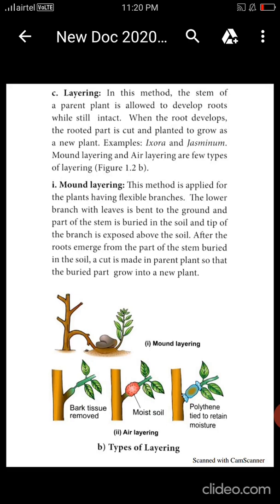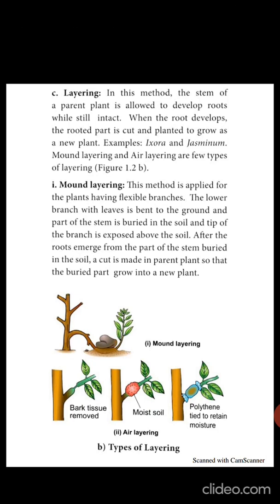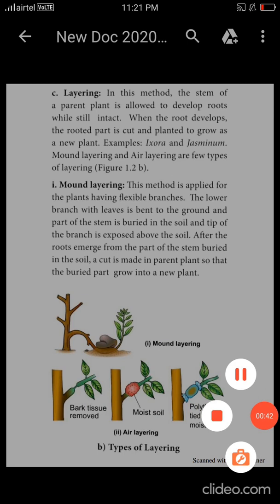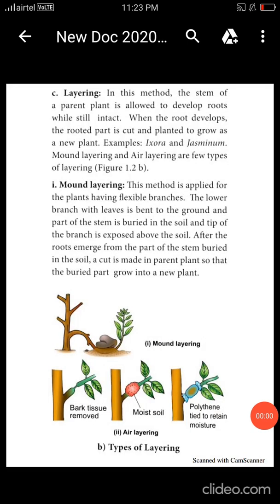In this type of reproduction, the stem of a parental plant is allowed to develop roots while still intact. When the root develops in the stem portion — the rooted part — it is cut to form new ones. That is the layering method. Examples of layering include Aegora, jasmine, and related flowering plants.